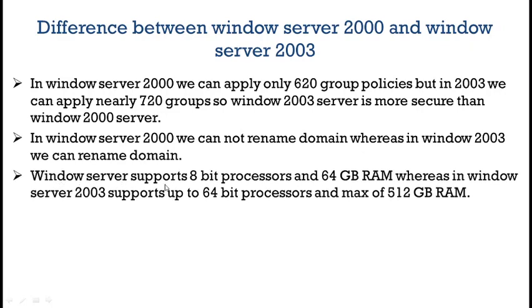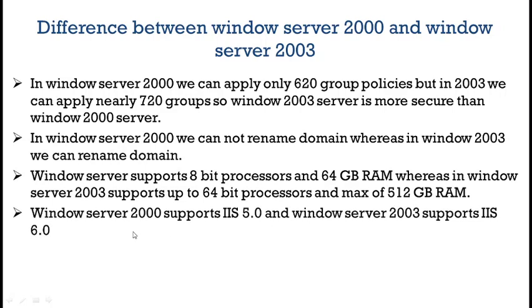Windows Server 2000 supports 8-bit processor and 64GB RAM. Whereas, in Windows Server 2003, it supports 64-bit processor and a maximum of 512GB RAM. Windows Server 2000 supports IIS 5.0 version and Windows Server 2003 supports IIS 6.0 version.